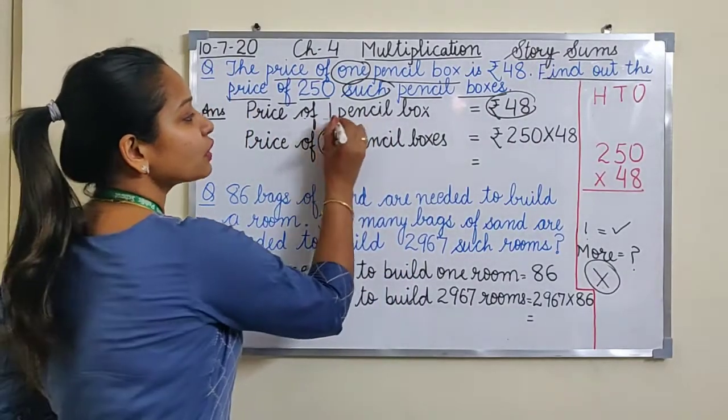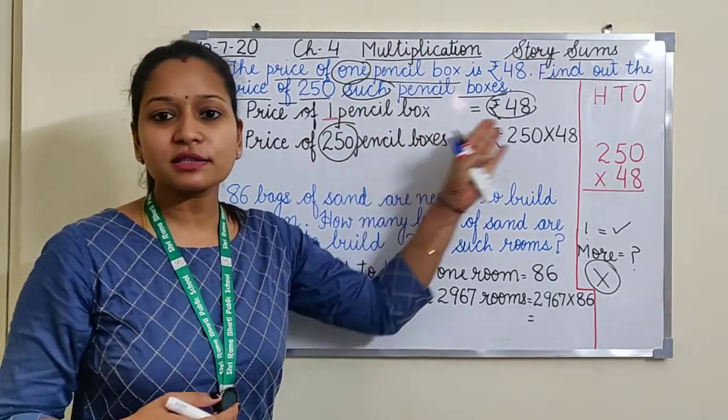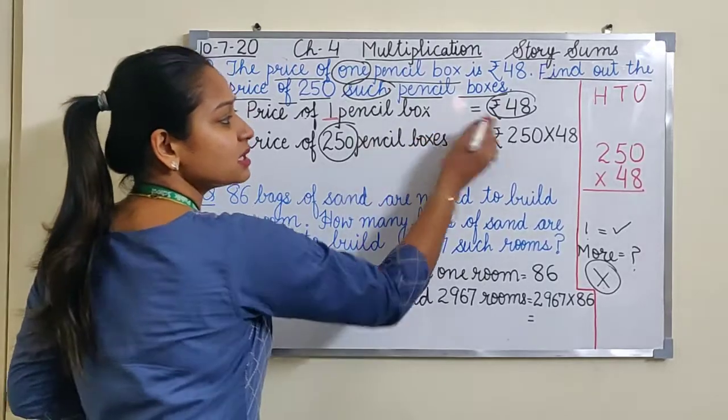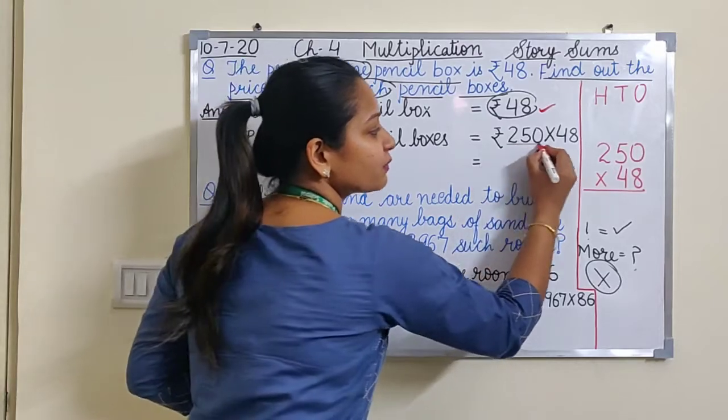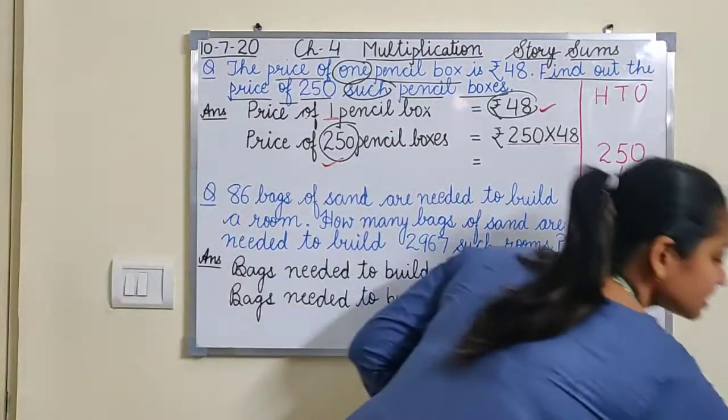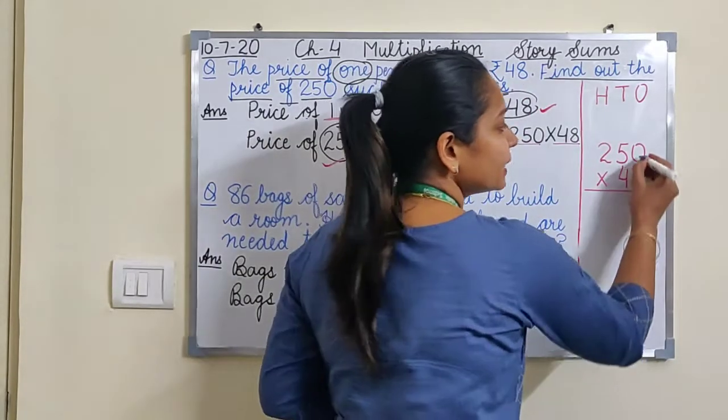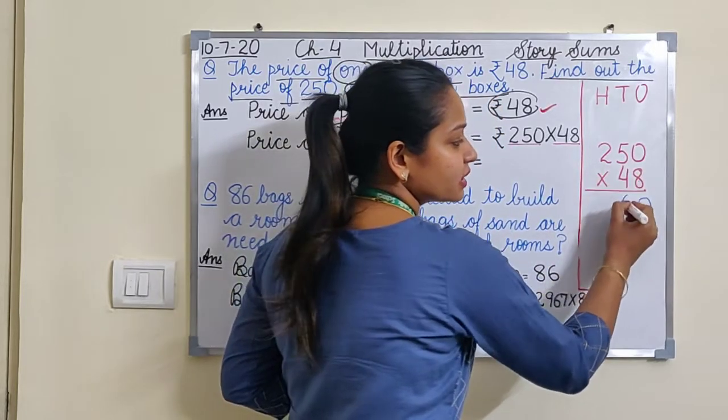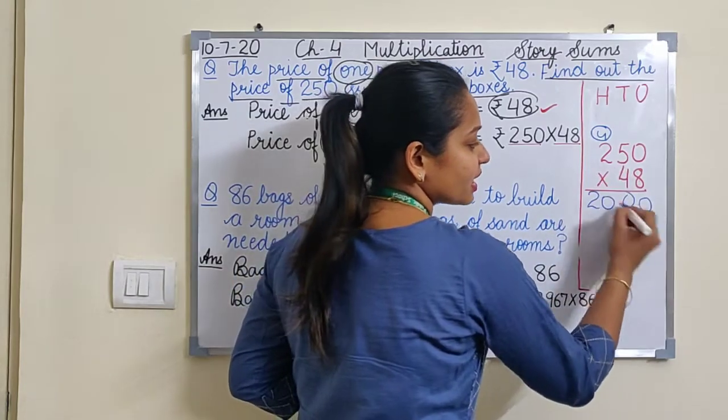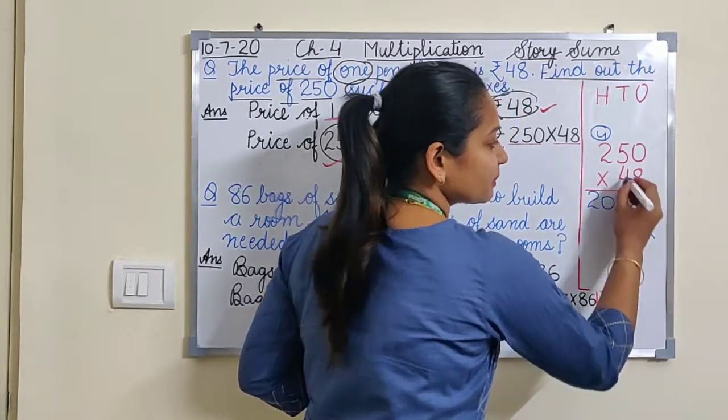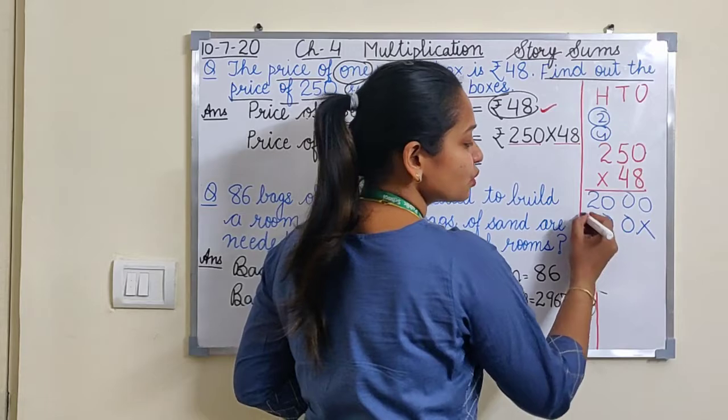Why only these two numbers? Why not one? Kyunki one ki toh koi value nahi hai. So 250 into 48. Let's multiply and see what the answer is. 8 into 0 is 0, 8 fives are 40, 0 hai aur 4 carry, 8 twos 16 plus 4 is 20. One line done. Now 4 into 0 is 0, 4 fives are 20, 0 here 2 carry, 4 twos 8 plus 2 is 10.